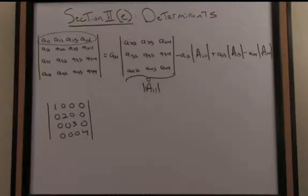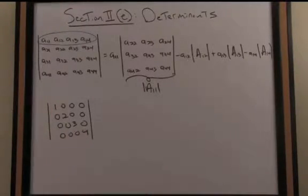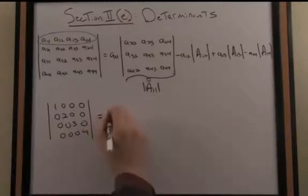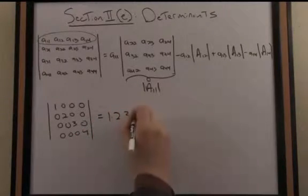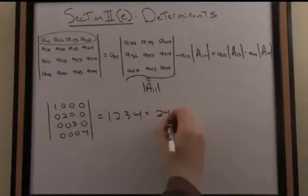By what's called the process of mathematical induction, you can prove the determinant of any diagonal matrix is equal to the product of the diagonal elements. So here we have a nice, simple computation. Even though that's a higher order or higher dimensional matrix, I just get 24.